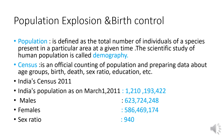In this slide we'll study population explosion and birth control. Population is defined as the total number of individuals of a species present in a particular area at a given time. The scientific study of human population is called demography. Census is an official counting of population and preparing data about age groups, birth, death, sex ratio, education, etc. In India, the first census was carried out in 1872; after that, it is done every 10 years, last done in 2011. Census is conducted as per the provision under the Census Act, 1948.